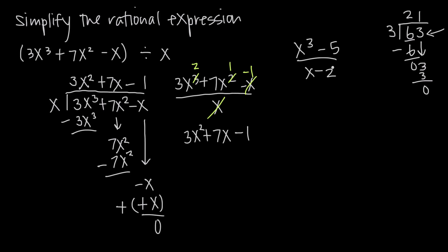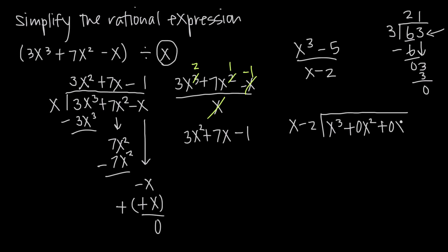For our second example, it's not as easy because the denominator is x minus 2, not just a single term. We take x minus 2 as the divisor and put it on the outside. For the dividend, we use the numerator x cubed minus 5. It's really important that we include all terms between x cubed and the constant 5. We need placeholders for x squared and x to the first power, so we write it as x cubed plus 0x squared plus 0x minus 5 inside the division bracket.